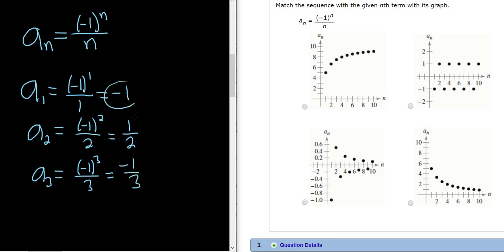So the first term is negative 1, then it's 1 half, then it's negative 1 third. So if you were to graph it without looking at the multiple choice answers, it would look something like this. I'm just going to put some yellow dots here. So negative 1 maybe is here, then 1 half, and then negative 1 third. So it just does something like that. That's the idea.